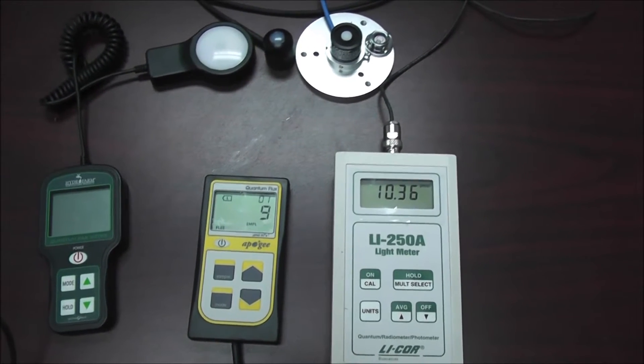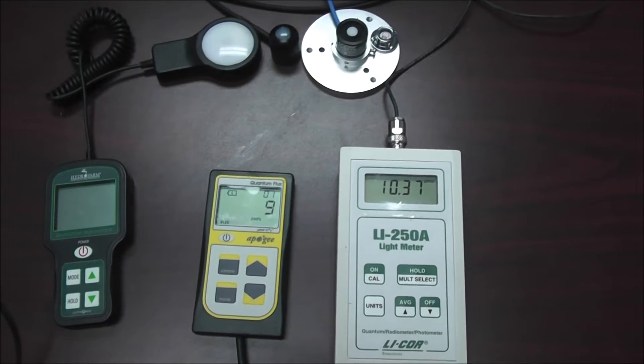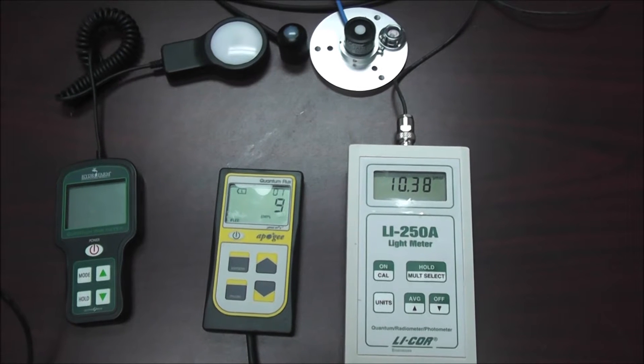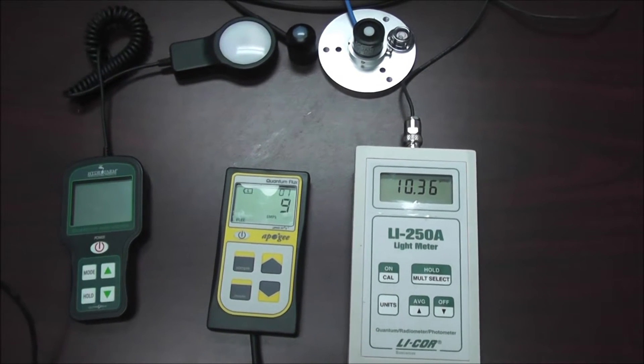Let me demonstrate the effect of horizontal light on the testing result. We use the LiCOR and the Apogee quantum meter as examples.